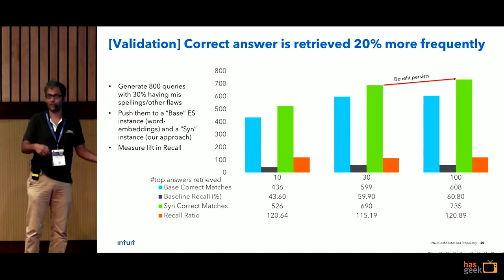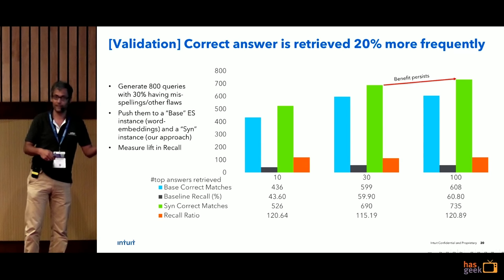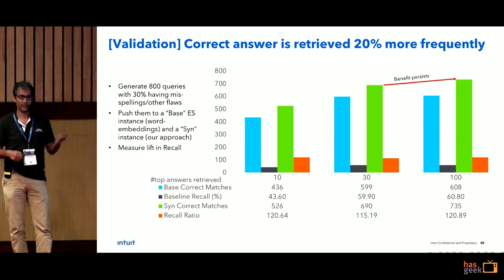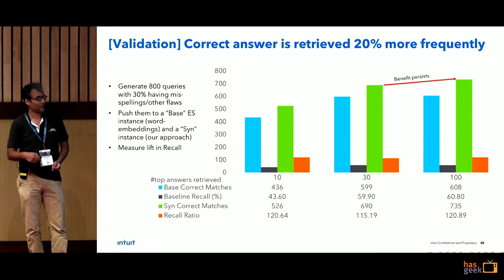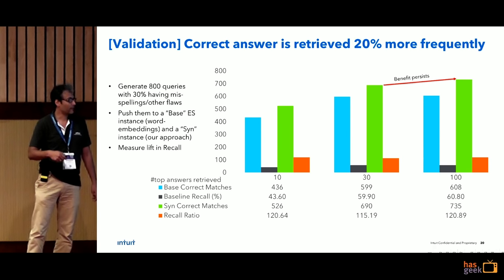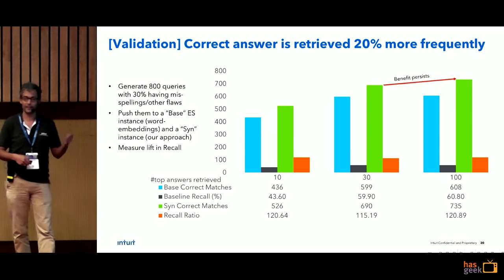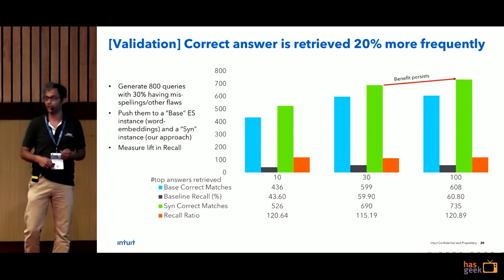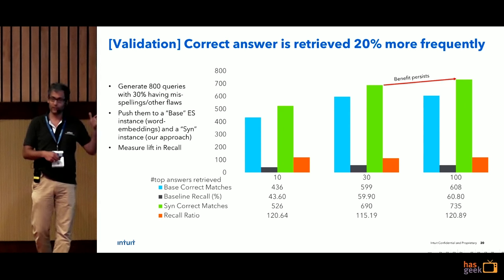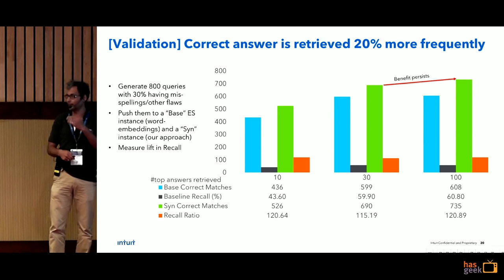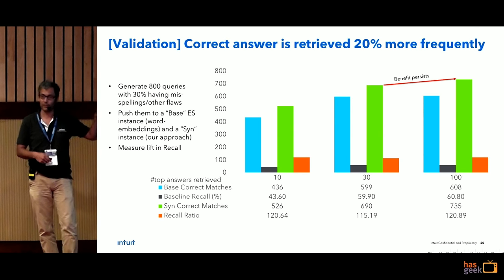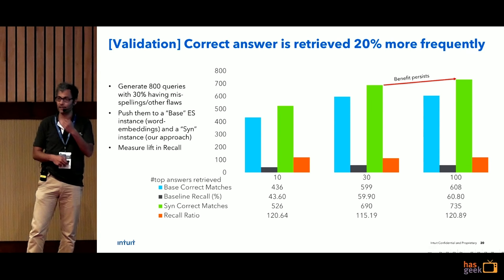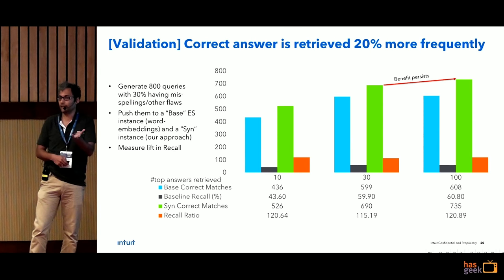This also motivates the next step: we need a re-ranking model, because the basic ranking provided by Elasticsearch isn't working perfectly. Whether an answer comes at rank 50 or rank 60 is a secondary question — if you can't retrieve it at all, ranking won't help. The purpose of this work was focused on recall: can you retrieve the answer? A downstream re-ranking model would then address precision.